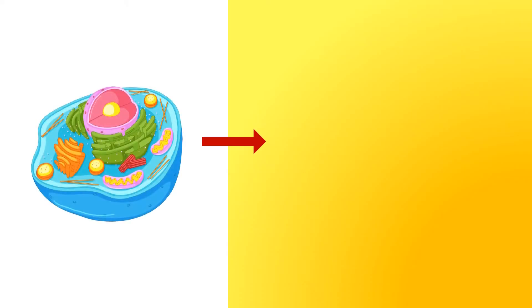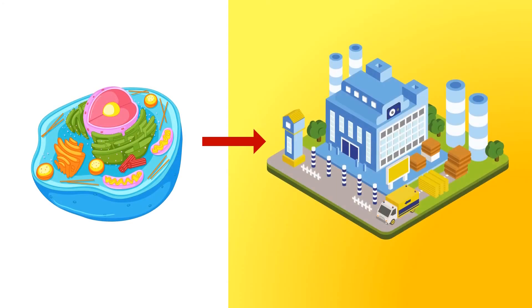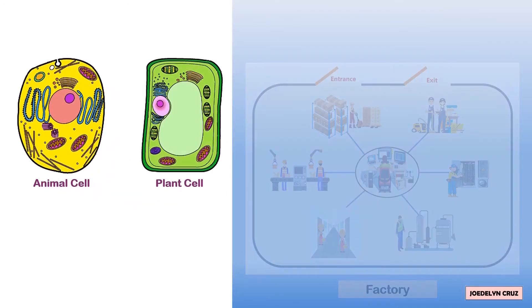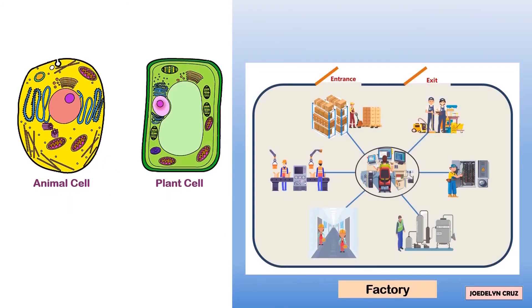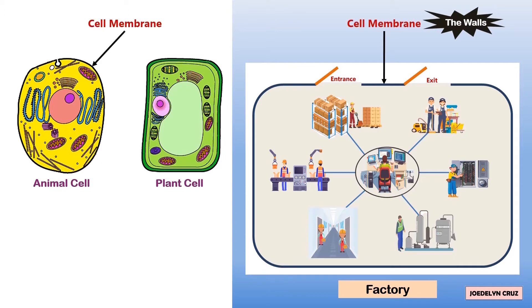Cell as Factory Analogy. The walls of the factory are the cell membrane. They enclose the factory and guard whoever comes in and out of the factory.